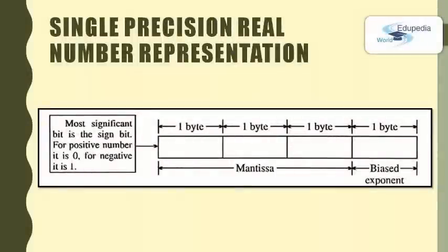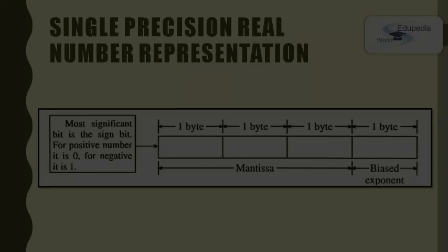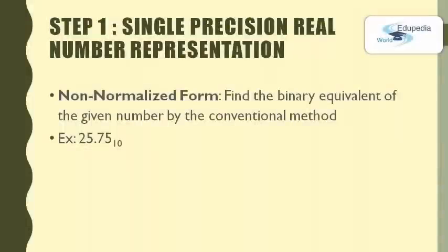In single precision numbers, 3 bytes are considered as the mantissa part and 1 byte is used as the biased exponent, as shown in this figure. It also uses the most significant bit, the MSB, as the sign bit. For positive numbers it is 0, and for negative numbers it is 1. Now let's learn about the step-by-step process of finding the binary equivalent of any real number.